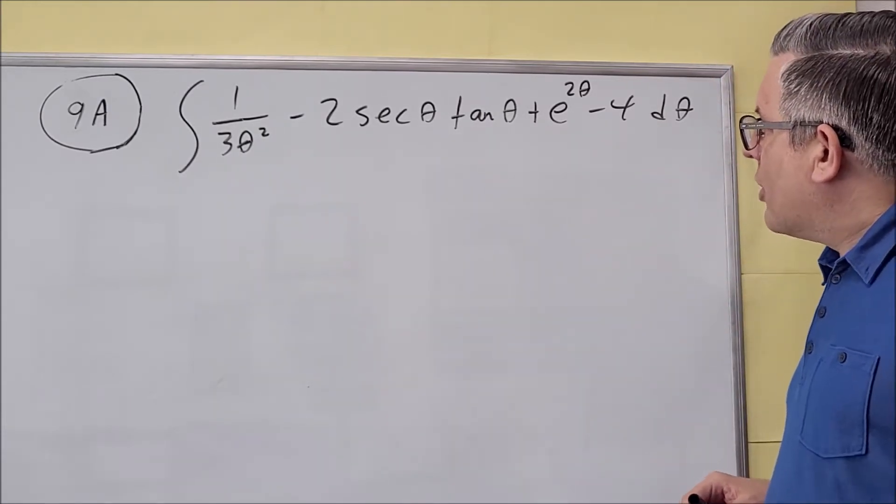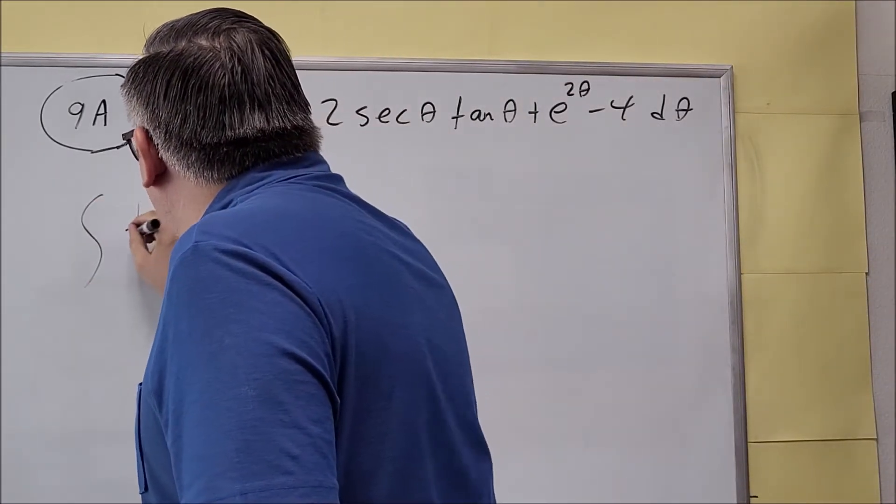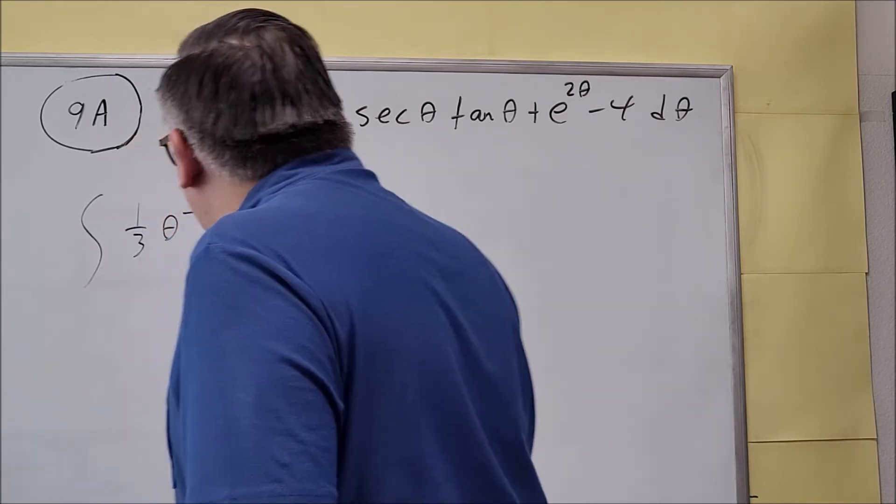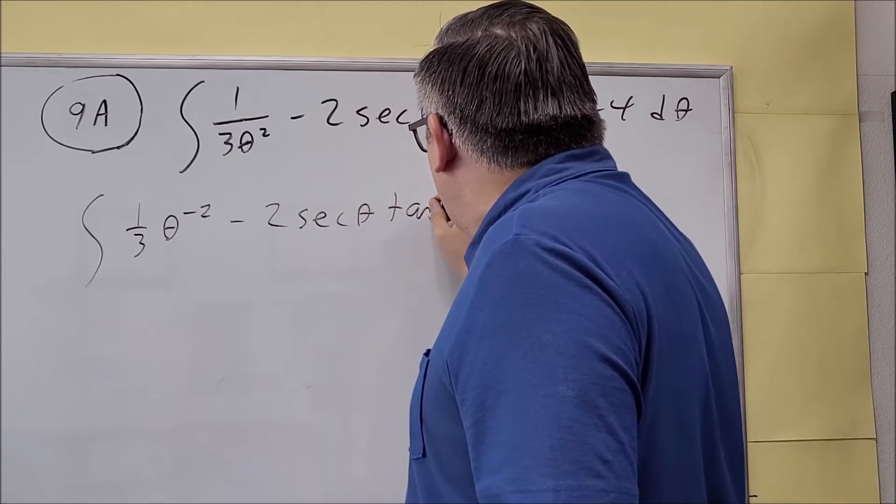So for this, this one right here, we can rewrite that first, so 1/3 theta to the negative 2 is how you'd write that first one. Of course everything else is going to be the same.